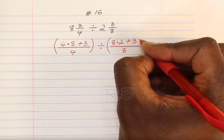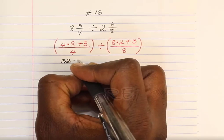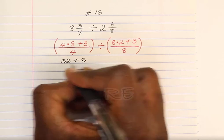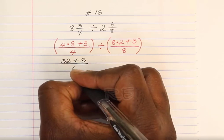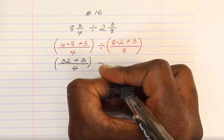We keep everything the way they are. 8 times 4 is 32 and we get 32 plus 3 divided by 4, between parenthesis.